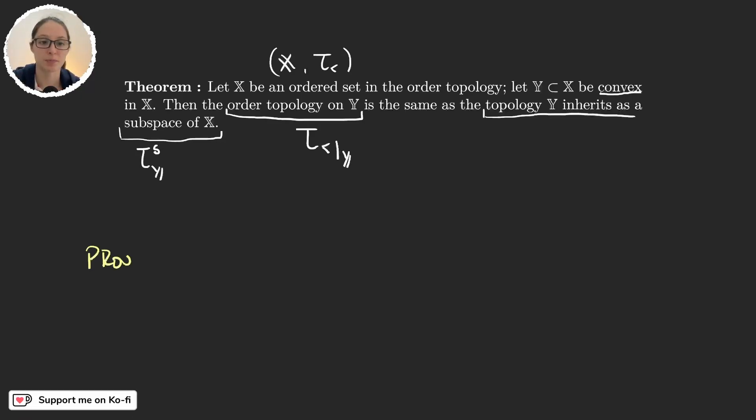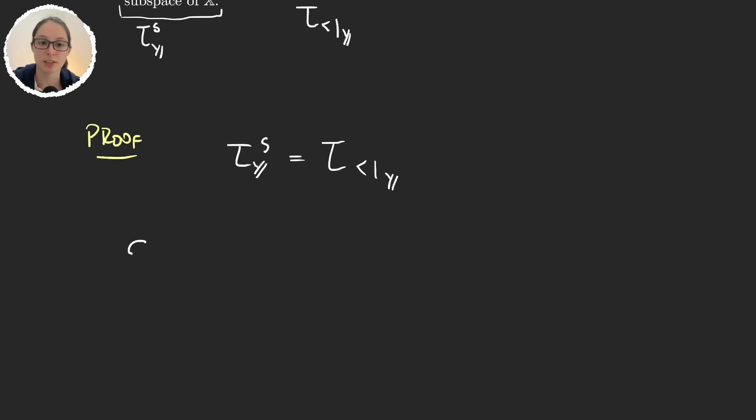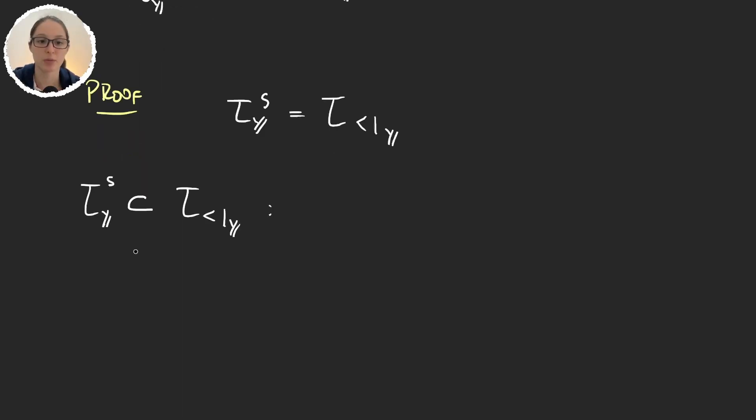So, let's start with a proof. What we want to prove is that tau Y S is equal to tau order restricted to Y. Let's start proving this inclusion. The subspace topology is equal to the order topology of Y. For this, we will just use the definition of inclusion.